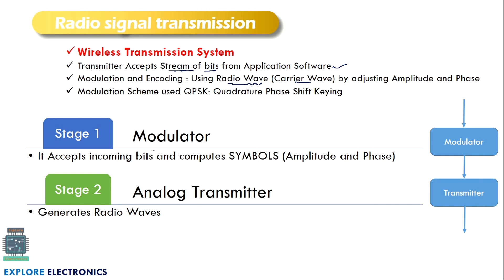The modulator accepts the incoming bits. Since it is digital communication, it takes the stream of bits and computes symbols. These symbols have amplitude and phase parameters, and are given to the transmitter. The transmitter generates the radio wave by taking the high-frequency carrier.